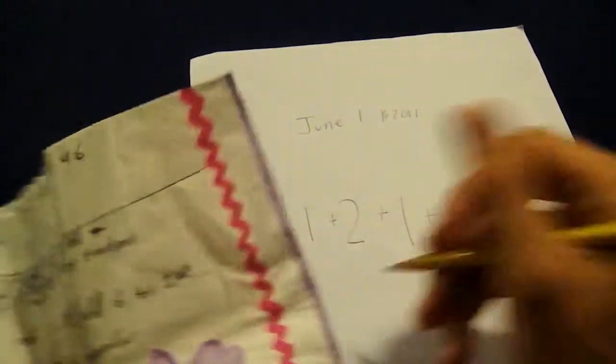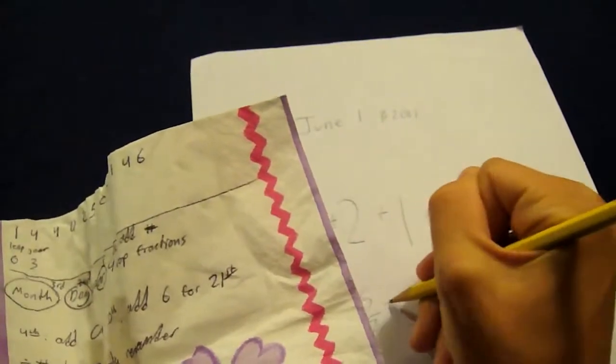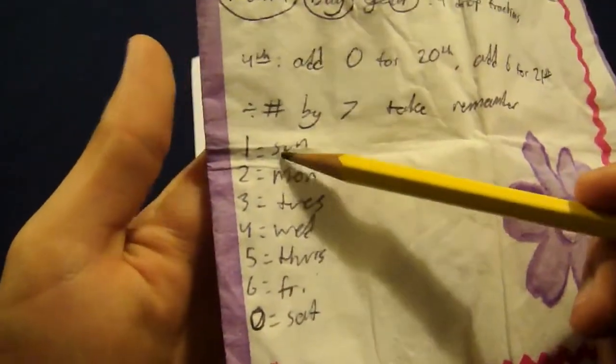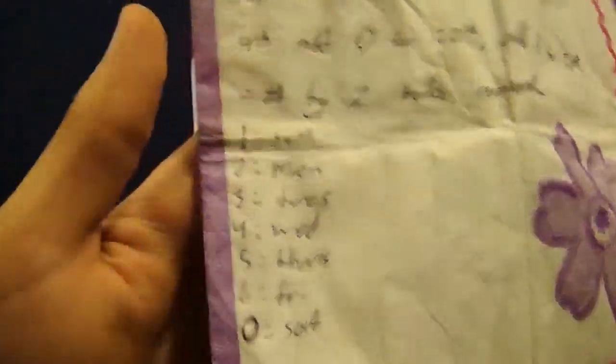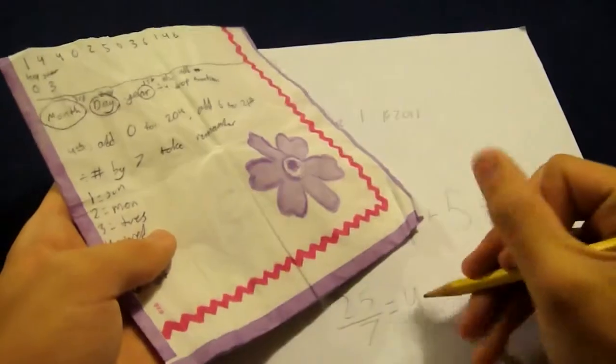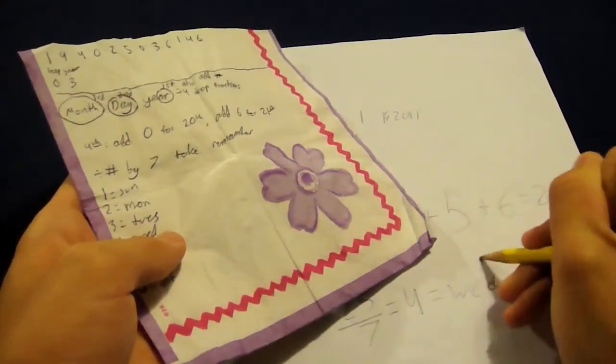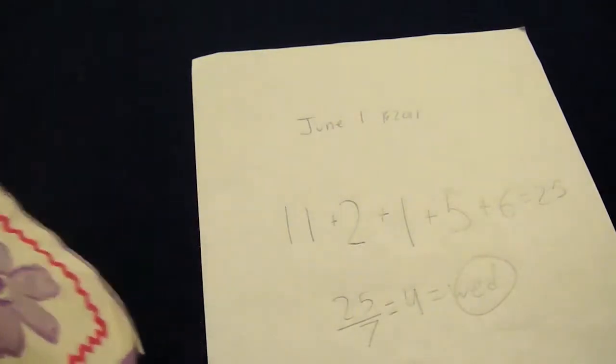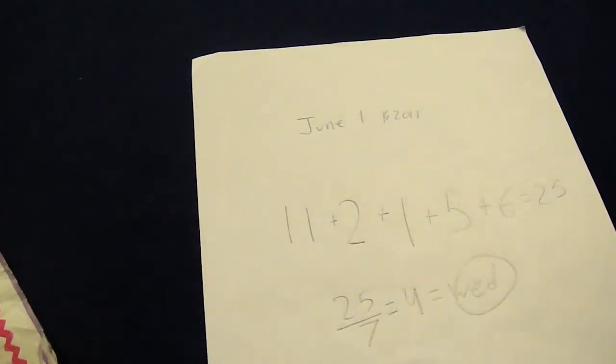Now you're going to take that 25 and you're going to divide it by 7. And that is going to equal... You're going to take the remainder of that, sorry. And that's going to equal 4. So the remainder of that will be 4. And then you refer to this chart over here. It says Sunday, Monday, Tuesday, Wednesday, Thursday, Friday, Saturday. There's a number next to each one and you just have to remember it starts with Sunday. And when you get to Saturday, it's a 0. So 4, Wednesday. So 4 equals Wednesday. And that is the day that June 1, 2011 will be on.